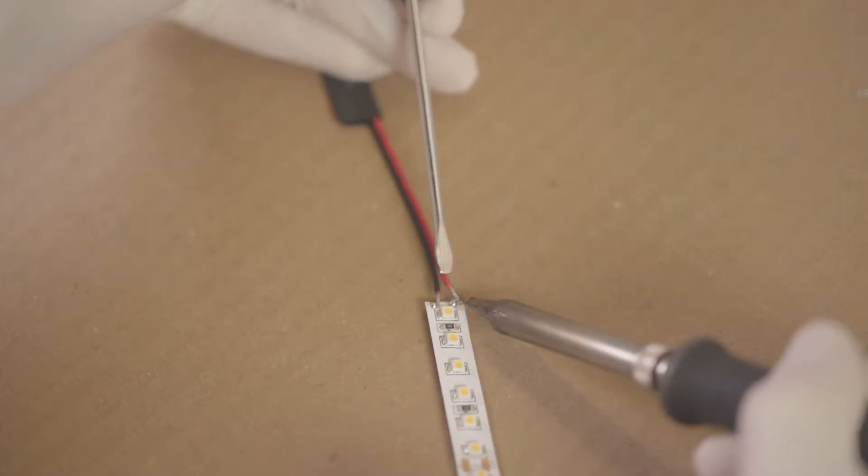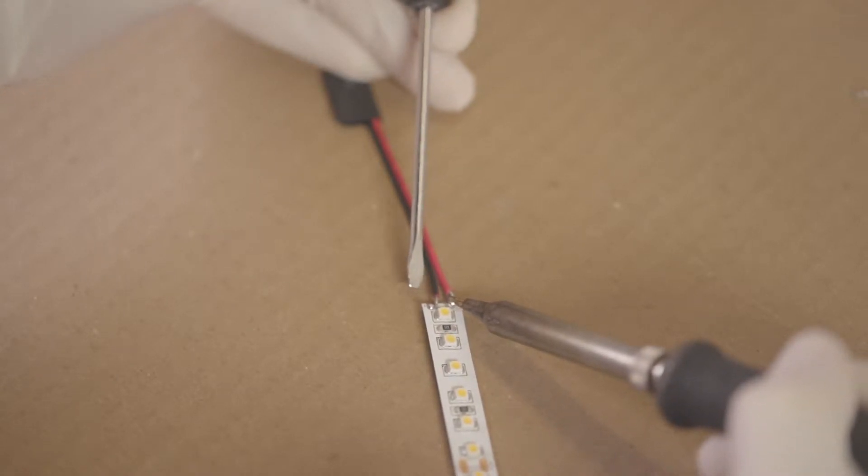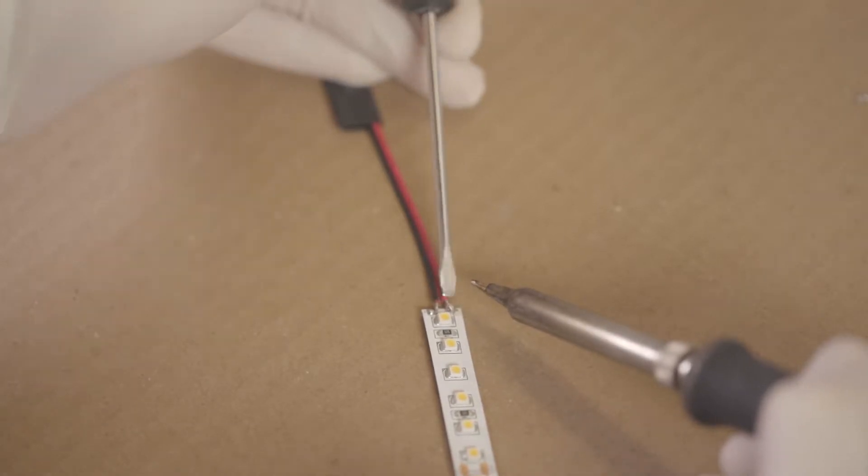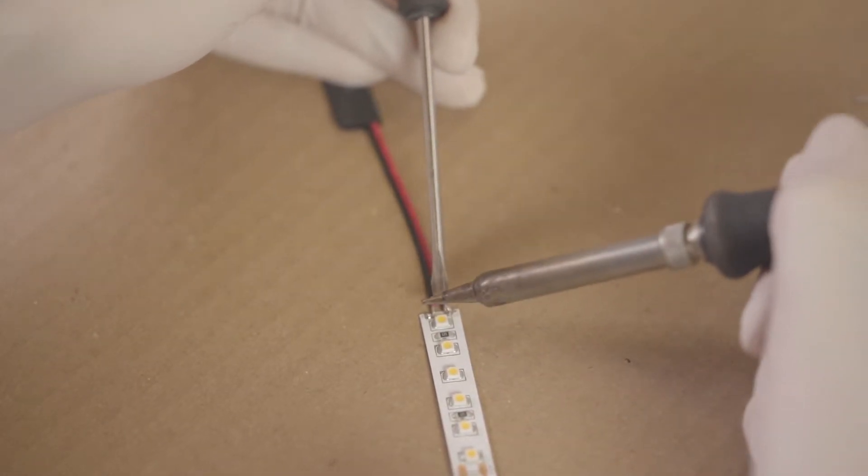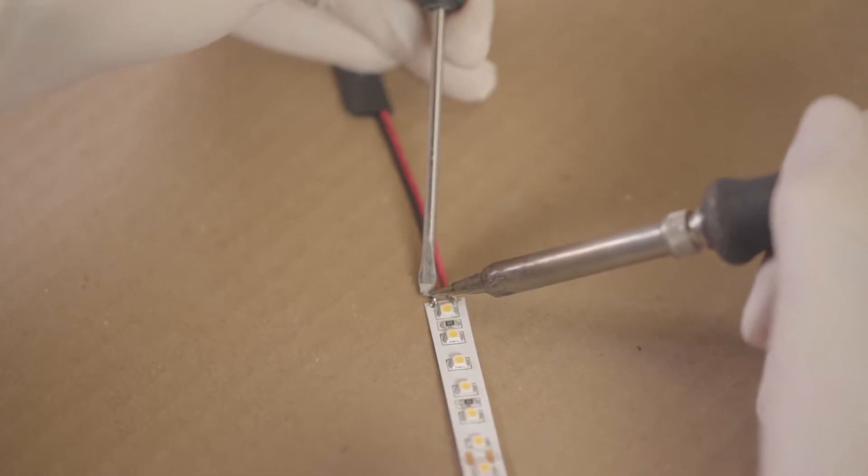Now remelt the solder on the contact and put the tinned wire into the melted solder. You might want to hold it down with a small screwdriver before releasing the iron, so the wire can't spring back while the solder is hardening. It only takes a second or so, but you need to keep the wire still during that time. It takes some practice.